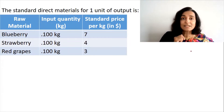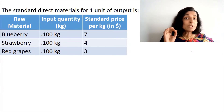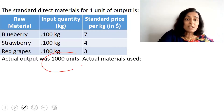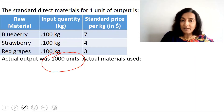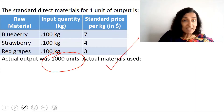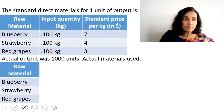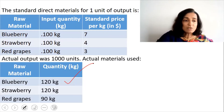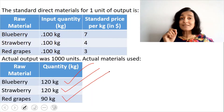The actual production is 1,000 units. The actual raw materials used for making these 1,000 units are: blueberry — 120 kg, strawberry — 120 kg, and red grapes — just 90 kg.